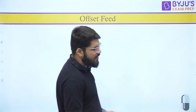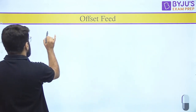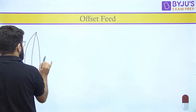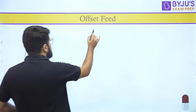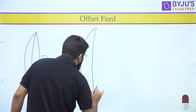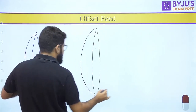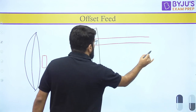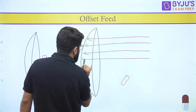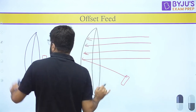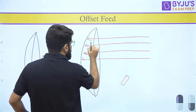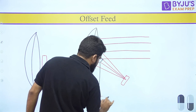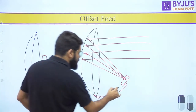Regarding the offset feed: we provide the feed a little bit on the downside so that the electromagnetic energy, as shown in the animation, falls over the maximum area of the reflector. The reflector then concentrates all that energy onto the feed. This feed is supported by the LNBF arm mechanism.